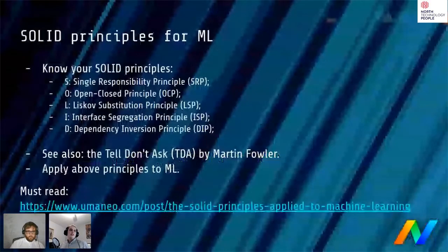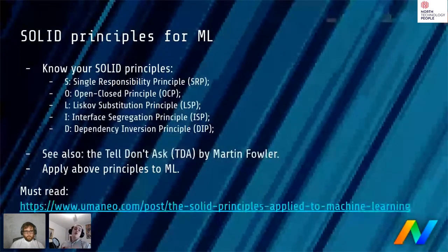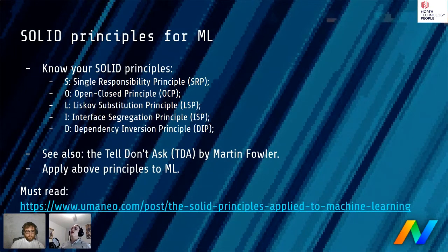The SOLID principles are object-oriented principles that you really get to use during code reviews. It's great to be able to say in a code review, 'That's the Single Responsibility Principle' — a valid concept to justify changes in critical code. This is especially important in machine learning frameworks, where hundreds of projects may be built on top, so everything needs to be well-tested, well-designed, and accessible.